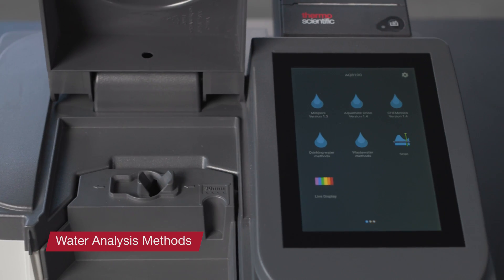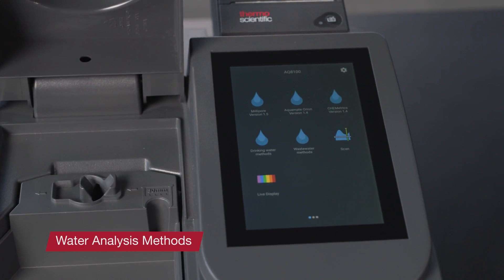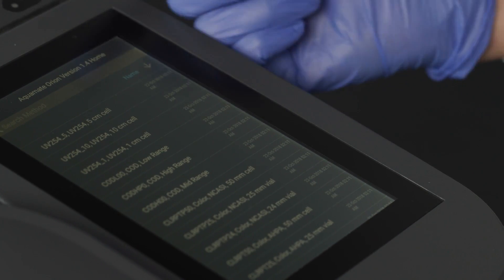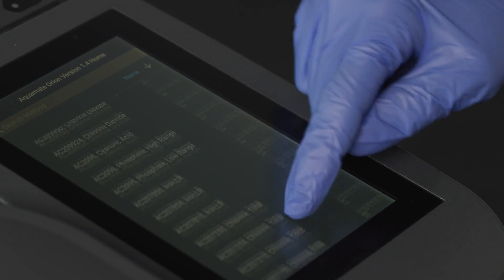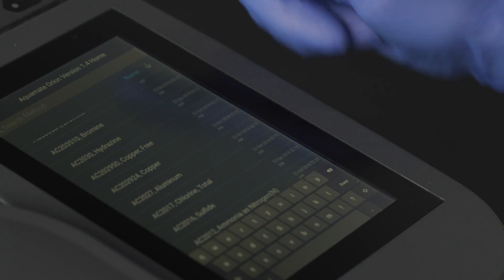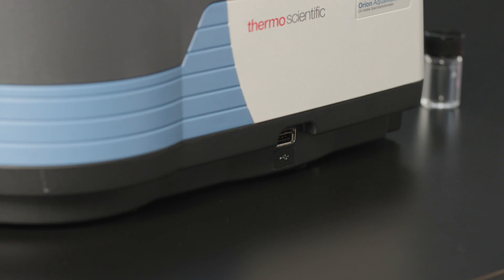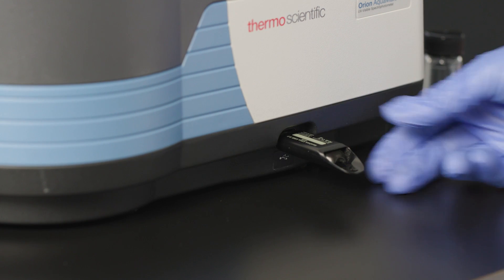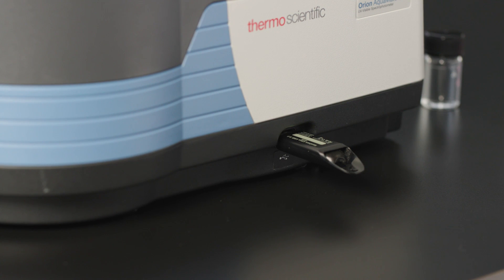Aquamate spectrophotometers come with over 260 pre-programmed water analysis methods. These include methods that work with our Thermo Scientific Aquafast reagents and some other manufacturer's reagents as well. And there's memory capacity to store many thousands of analysis results and custom methods or curves.